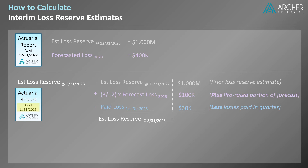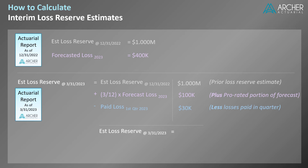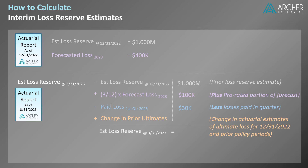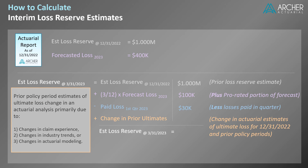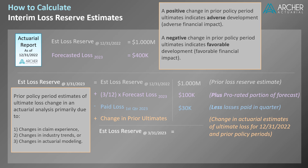As part of an actuarial analysis as of 3/31/2023, estimates of loss for historical policy periods — that is, 12/31/2022 and prior — are re-evaluated. The change in prior policy period estimates of ultimate loss directly affects the 3/31/2023 loss reserve estimate. Prior policy period estimates of ultimate loss change in an actuarial analysis primarily due to three reasons: changes in claim experience, changes in industry trends, or changes in actuarial modeling. In practice this amount can be positive or negative — a positive amount indicates adverse development and a negative amount indicates favorable development. For our example, assume this change equals negative fifty thousand dollars. This amount represents the key difference between the interim estimate and the actuarial estimate.